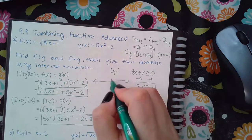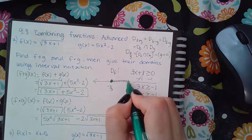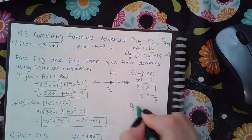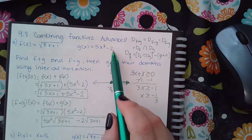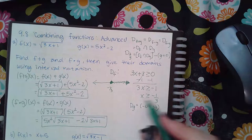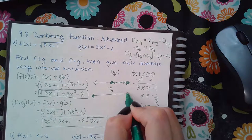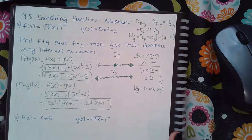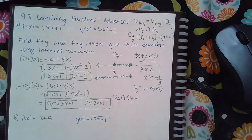On the number line, negative one-third has a solid dot because of the greater-than-or-equal sign, and everything greater than negative one-third is included. The domain of g is all real numbers because there's no radical and no fraction in that expression, so the domain of g is automatically negative infinity to infinity — that's the entire number line, solid from negative infinity to positive infinity.